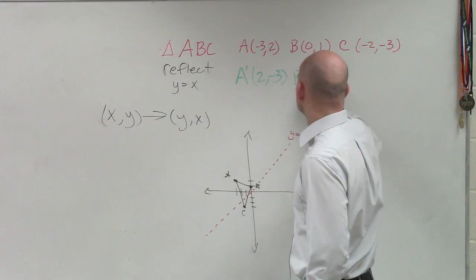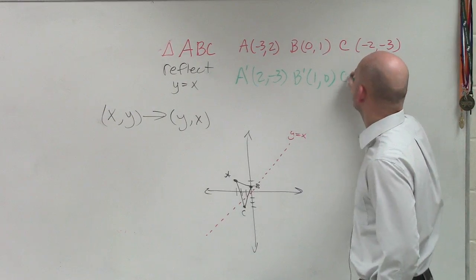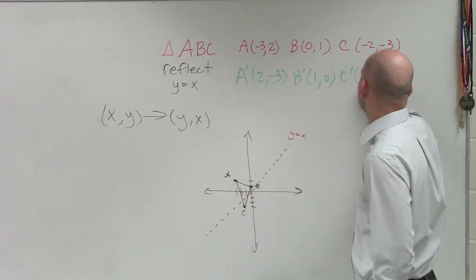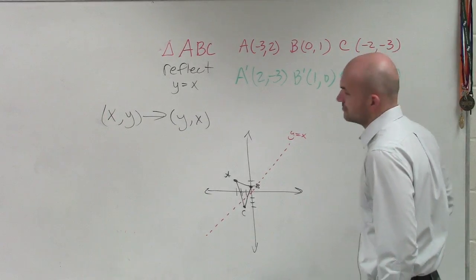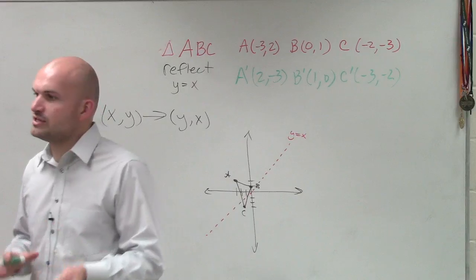B prime is (1, 0). C prime is (-3, -2). All right? So all I'm simply doing is just switching them around.